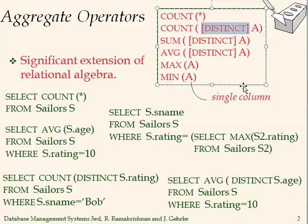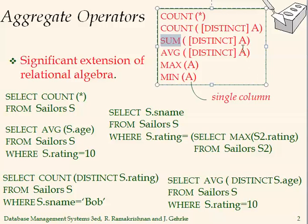For SUM we cannot use the star because we need to specify which attribute to add — for example, sum of salaries for employees. SUM DISTINCT is also possible. For AVERAGE similarly. With MAX and MIN we don't need to specify DISTINCT because we're just looking for the greatest and the minimum values.